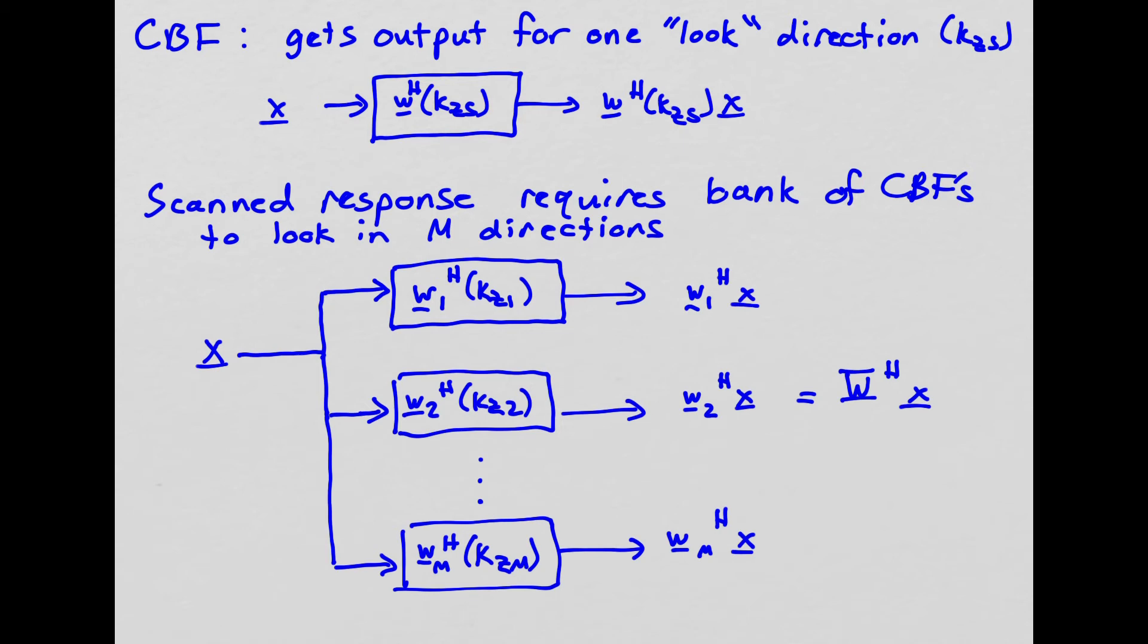The scanned response requires actually a bank of conventional beamformers to look in m different directions. So here we define different weight vectors for different directions. So for direction KZ1, direction KZ2, up to direction KZm. That's m different beamformers. So if we define m different beamformers, then we can calculate a scanned response, where we're essentially scanning across all of the different directions associated with the bank of beamformers.